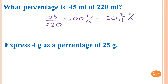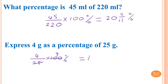Express 4 grams as a percentage of 25 grams. All we need to do is 4 out of 25, and because we want a percentage, we just times by 100. Now, 25 goes into 100 four times, so 4 times 4 is 16 — so the answer is 16 percent.